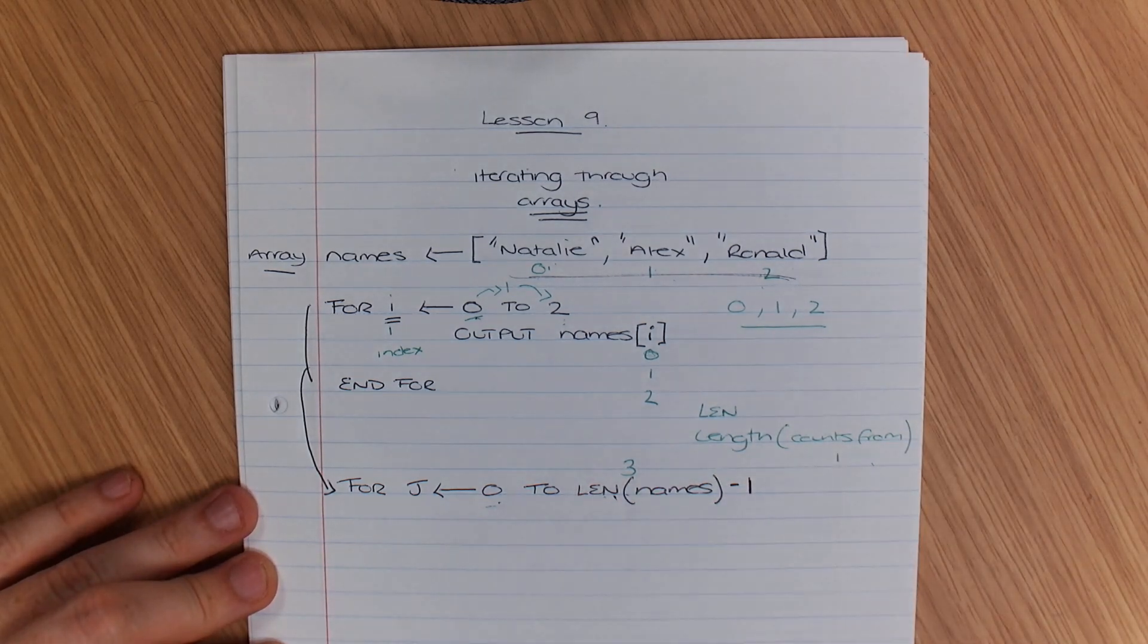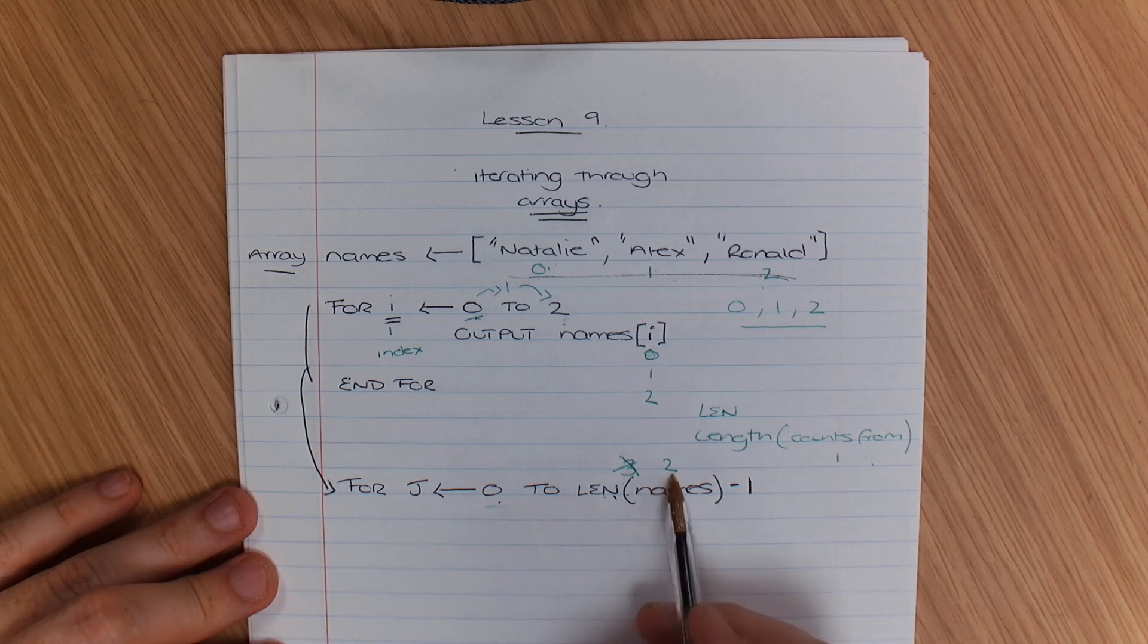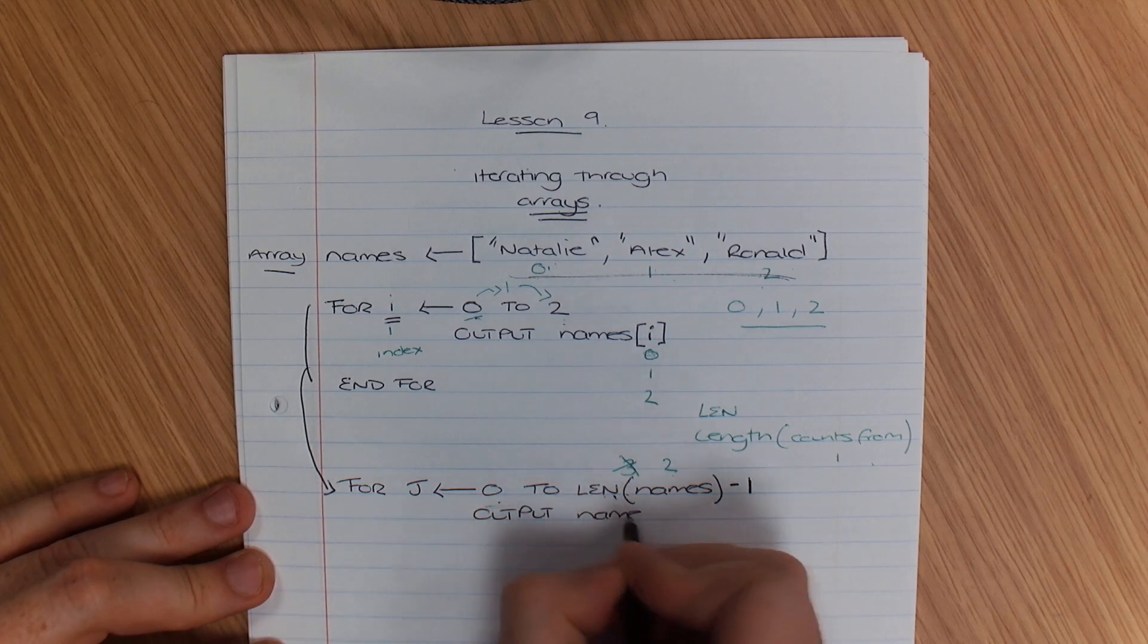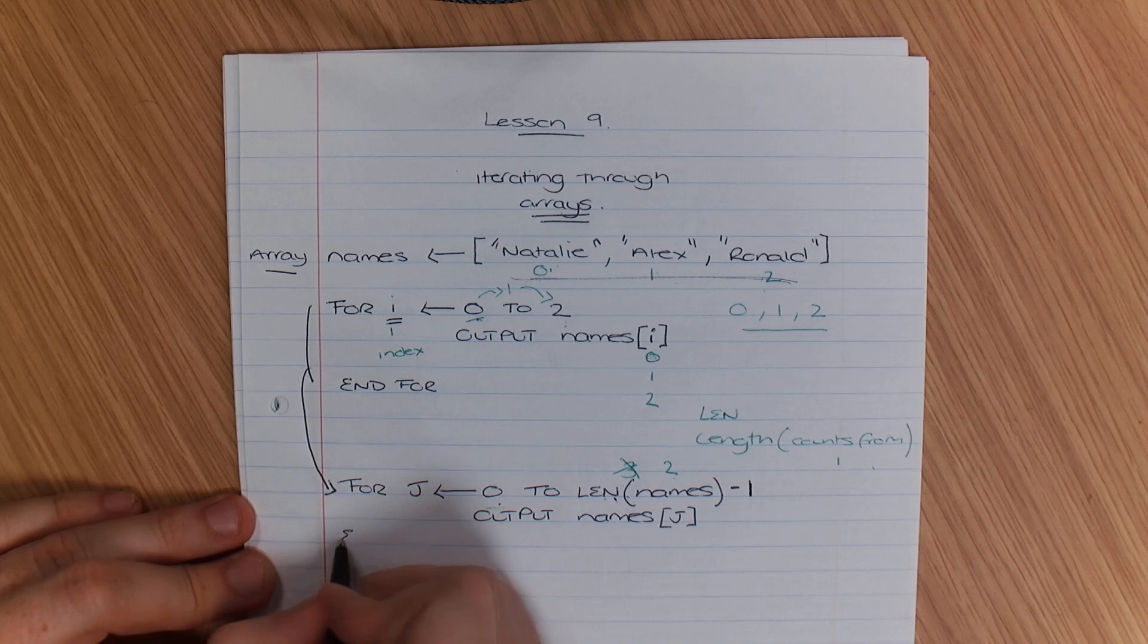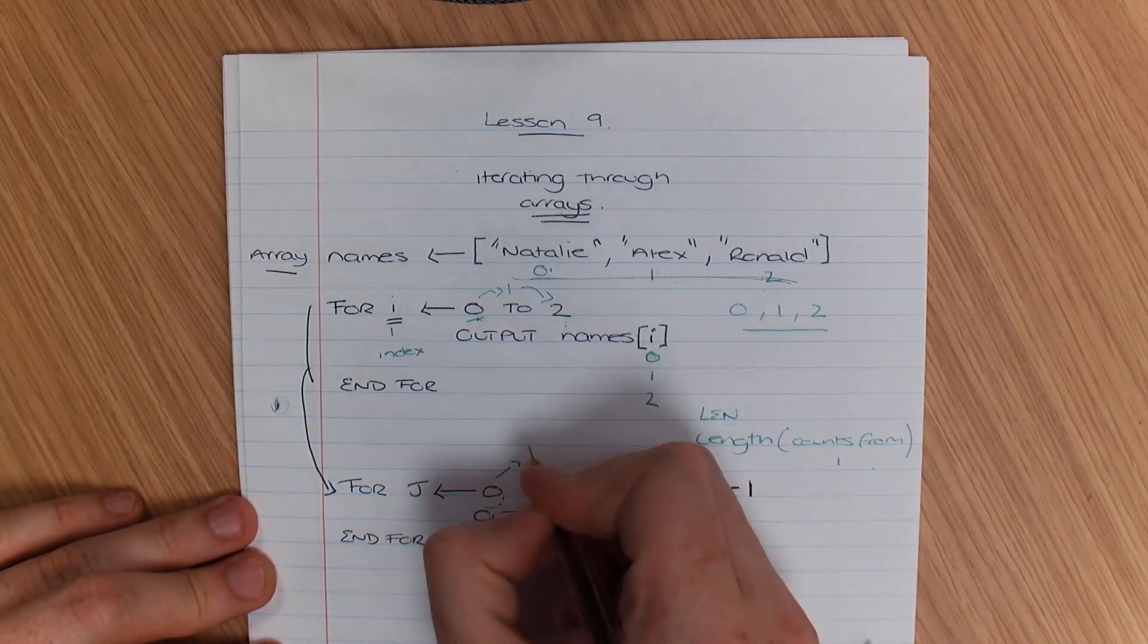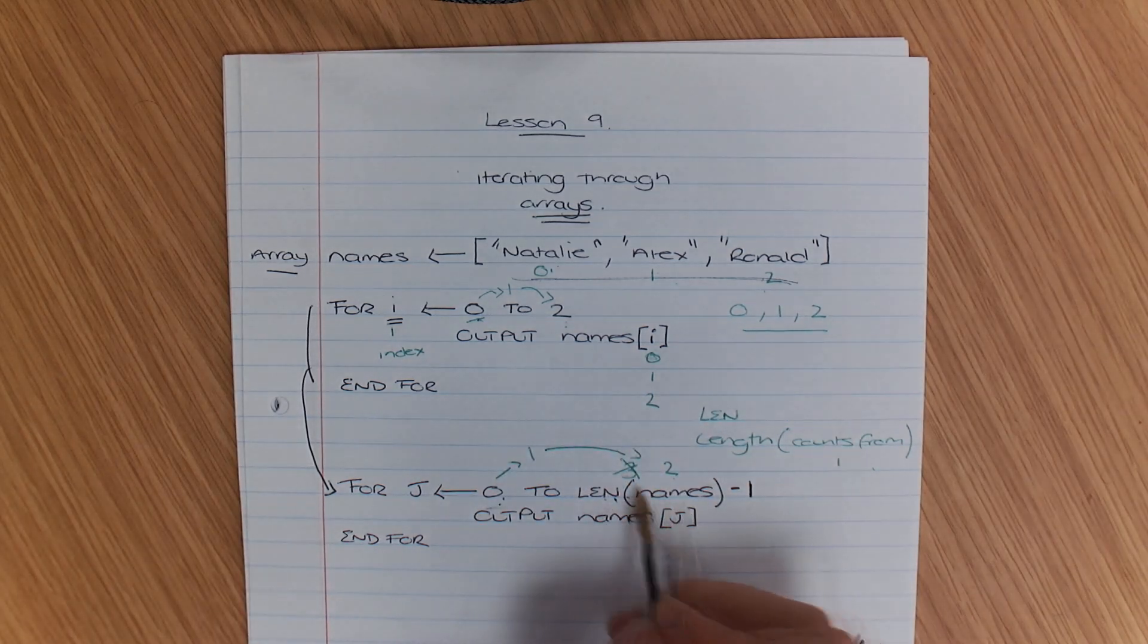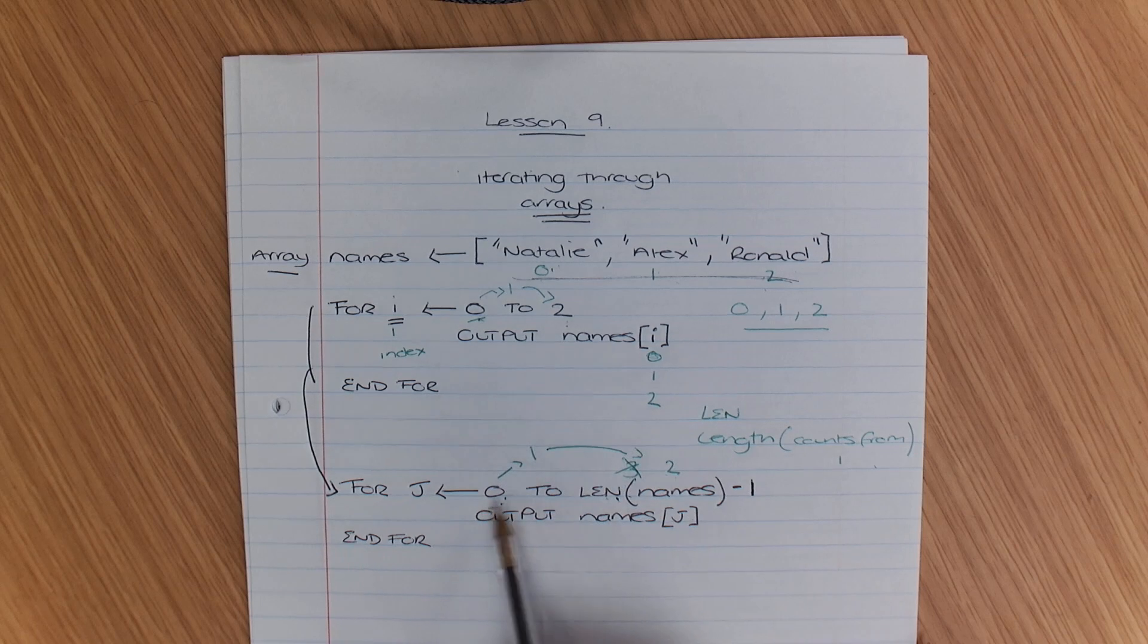So that value now becomes 2 again. So what that's going to do is output 0, 1, 2. But can you see if I did not subtract 1 from that length, it would then go on to 3. So that's why we use a for loop.